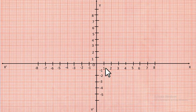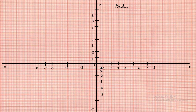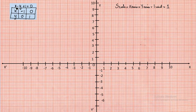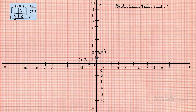Let us plot the points on the graph using the x-axis and y-axis. The scale is: x-axis = y-axis = 1 unit = 1. For equation 1 (x − y + 1 = 0), at x = −1 and y = 0 we get point A, and at x = 0 and y = 1 we get point B. We join these two points with a straight line representing the equation.